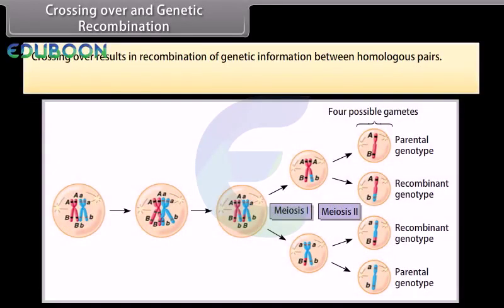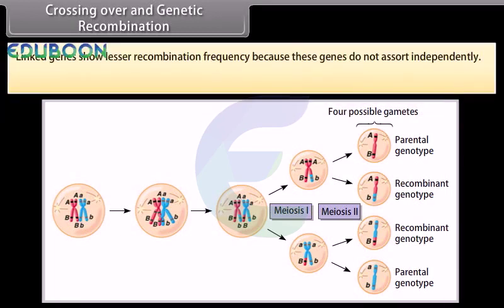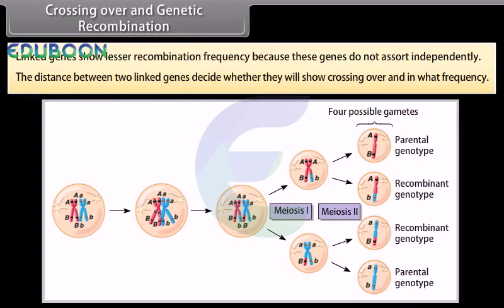Crossing over results in recombination of genetic information between homologous pairs. Recombination refers to the genetic assortment of alleles on the same chromosome during meiosis. Linked genes show lesser recombination frequency because these genes do not assort independently. The distance between two linked genes determines whether they will show crossing over and at what frequency.